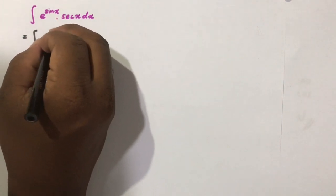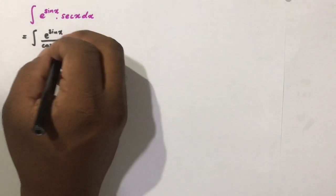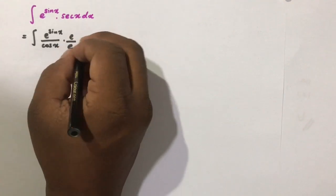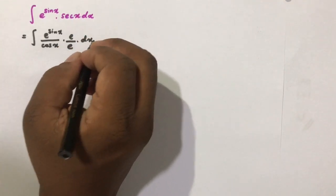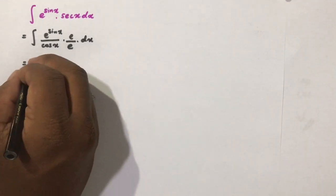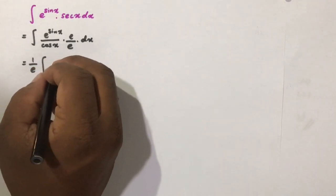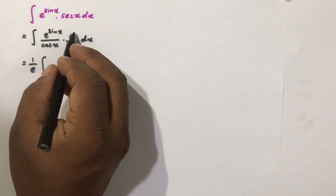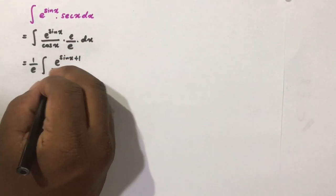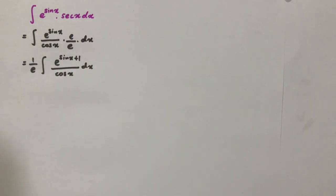We write e to the sine of x times secant of x, which is 1 over cosine of x. Then I am going to multiply both numerator and denominator by e, so we can take that e outside of the integral sign, giving 1 over e times the integral. Now e to the sine x times e to the 1 power simplifies to e to the sine of x plus 1 over cosine of x dx.